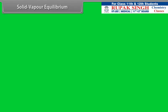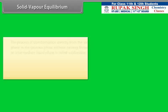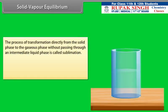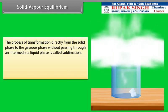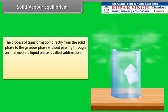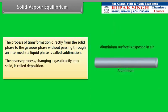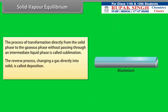Solid-Vapor Equilibrium: The process of transformation directly from the solid phase to the gaseous phase without passing through an intermediate liquid phase is called sublimation. The reverse process — changing a gas directly into solid — is called deposition. For example, dry ice.